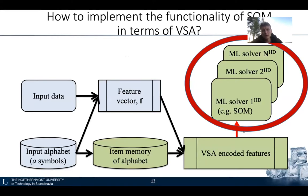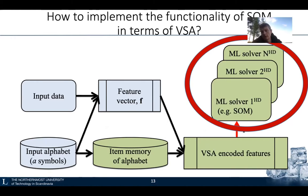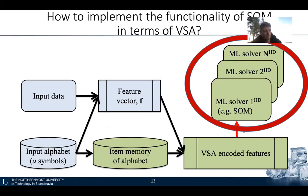Now I'm coming to the second part of the machine learning pipeline using VSA. As I said, we can achieve definite gains by representing data using vector symbolic architectures. But you can further improve runtime performance if the core of the solver is also implemented using VSA operations. During the last webinar, we saw that a random vector functional link network can be implemented using VSA operations. Now I want to show you that even self-organized maps can be implemented in this way.